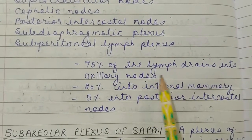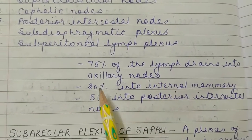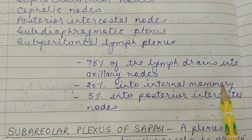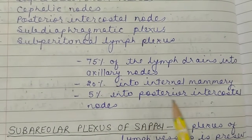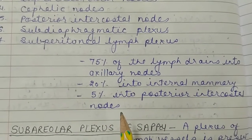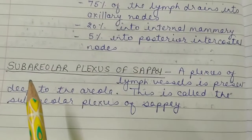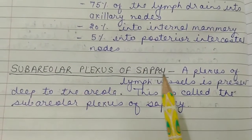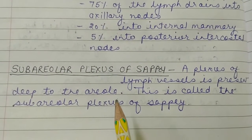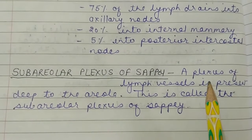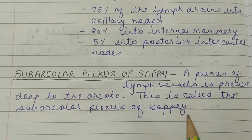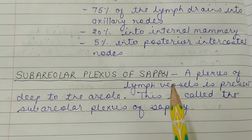75% of lymph drains into axillary nodes, 20% into internal mammary nodes, and 5% into posterior intercostal nodes. A plexus of lymph vessels is present deep to the areola, called the subareolar plexus of Sappey.